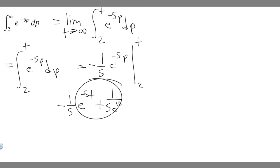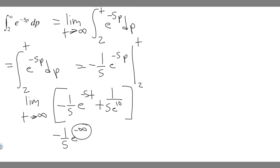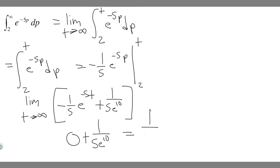Now we evaluate with the limit. We take the limit as t approaches infinity of the expression: minus 1 over 5 e to the minus 5t plus 1 over 5e to the 10. Plugging infinity in for t gives minus 5 times infinity, which is negative infinity in the exponent. That means e to the minus infinity equals 1 over e to the infinity, and since e to the infinity is essentially infinity, 1 over infinity approaches 0. So that entire first term goes to 0, and we're left with just 1 over 5e to the 10.